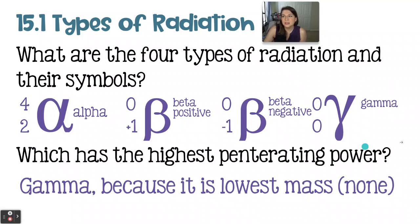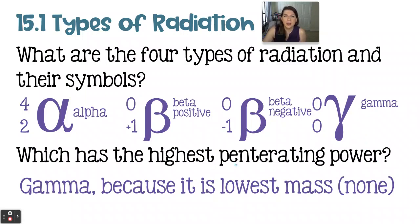Lastly, we have gamma radiation, which is literally just energy. There is no mass to gamma radiation — you'll also sometimes hear people talk about it as gamma rays. Because it has no mass at all, it has the highest penetrating power out of the four types of radiation.